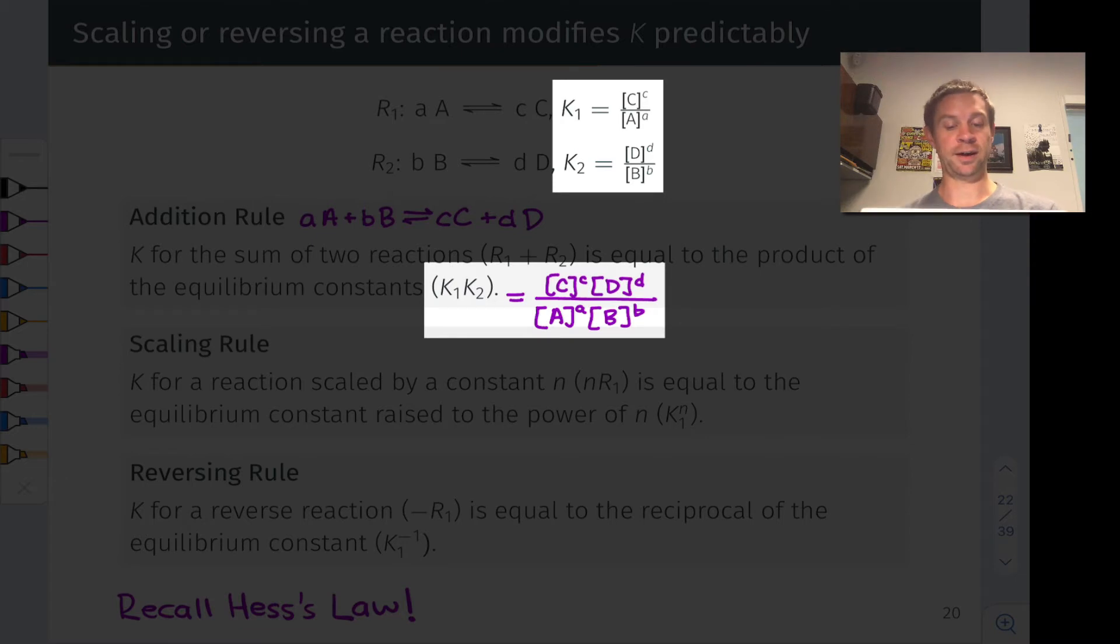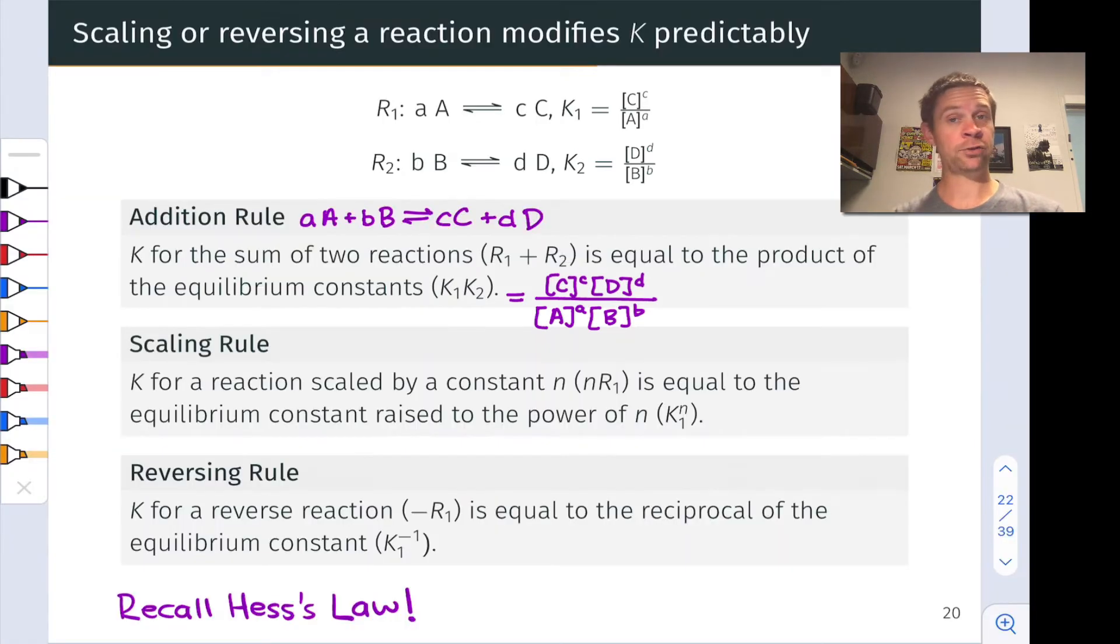So notice that K1 times K2 would give you this result here with C and D molarities in the numerator and A and B molarities in the denominator. So when we add two reactions, R1 and R2, the equilibrium constants are multiplied to find the equilibrium constant of the sum. That's the addition rule.